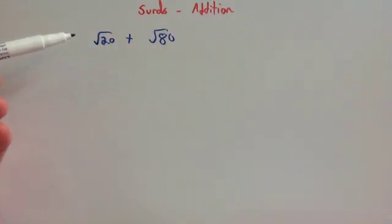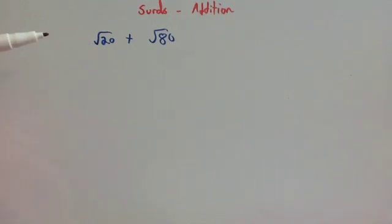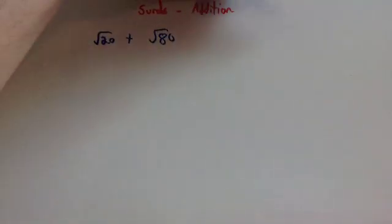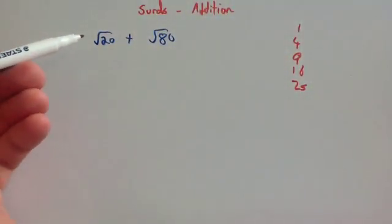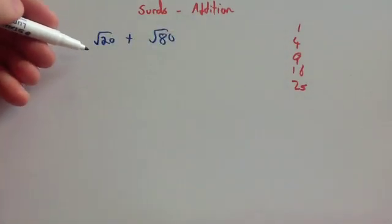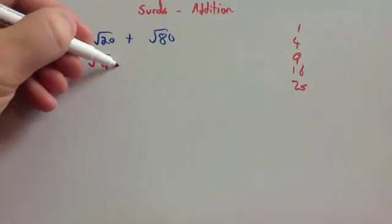So let's simplify root 20 first. Remember, whenever we want to simplify surds we want to split it into two different roots, with one of them being the highest square number possible. The highest square number that you can divide 20 by — jotting down square numbers: 1, 4, 9, 16, 25 — is 4. So root 20 is equal to root 4 times root 5.